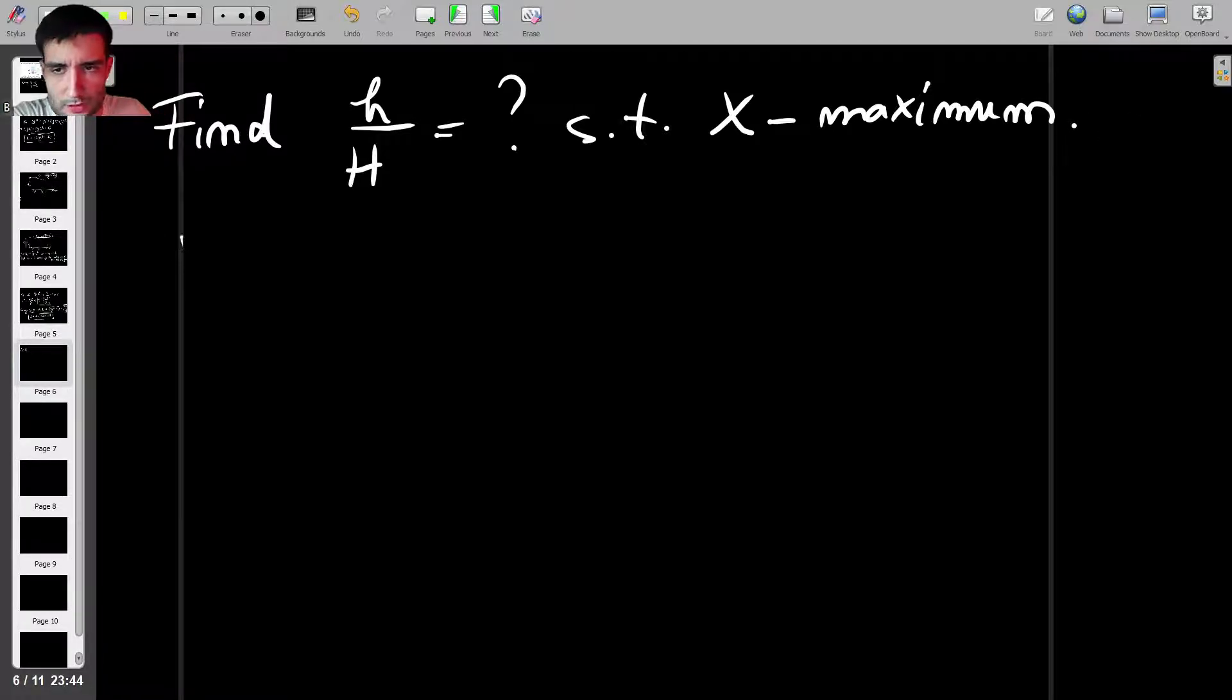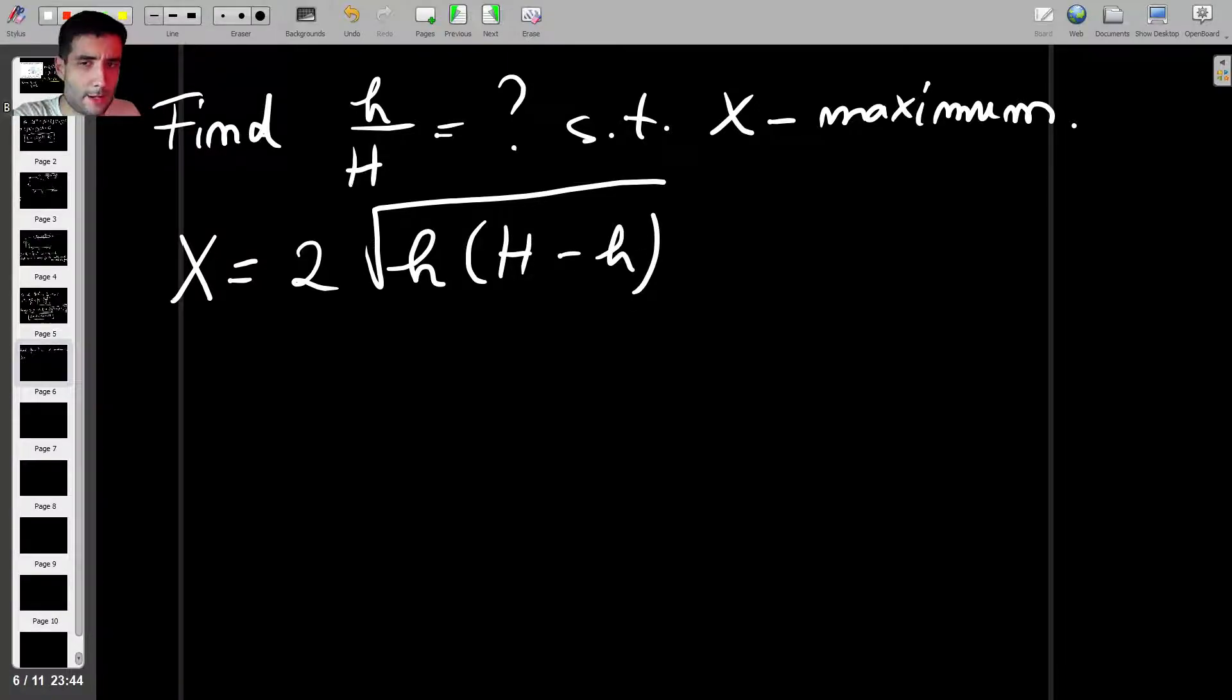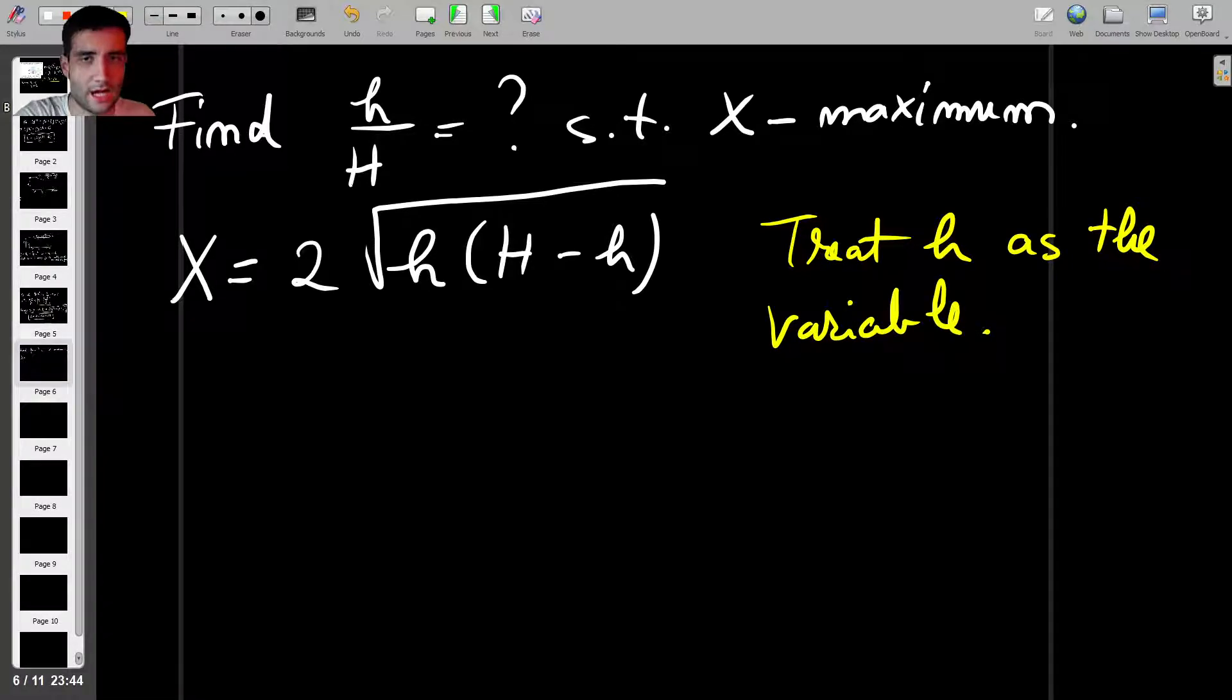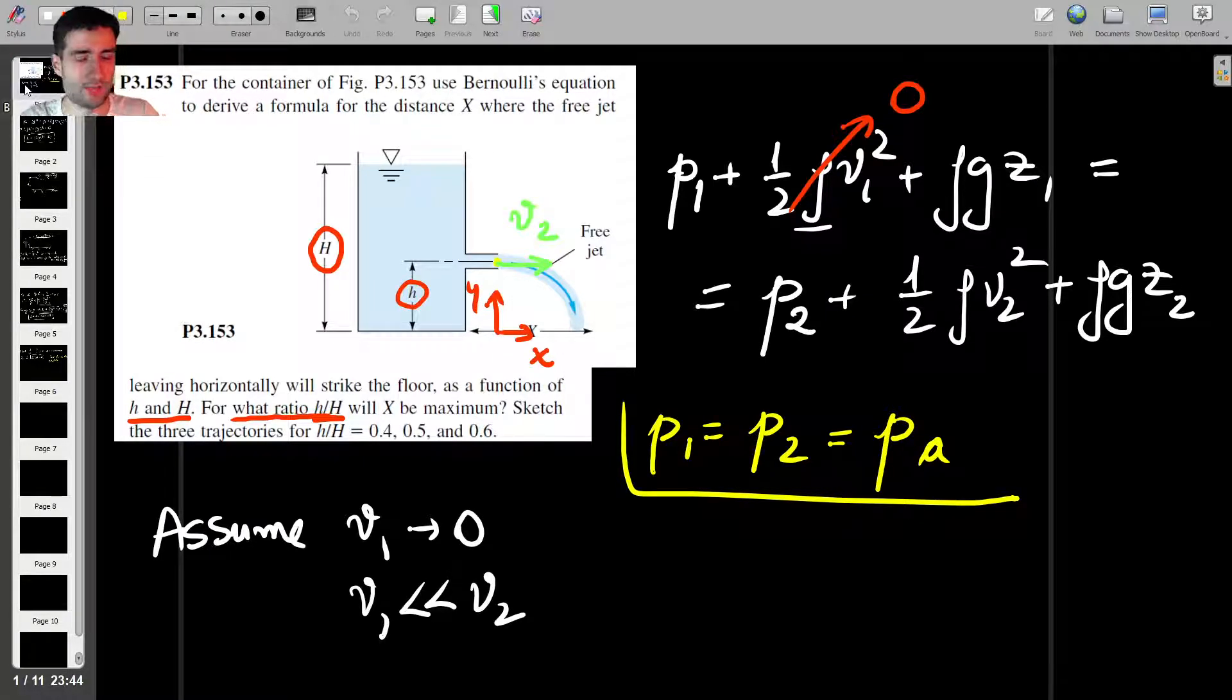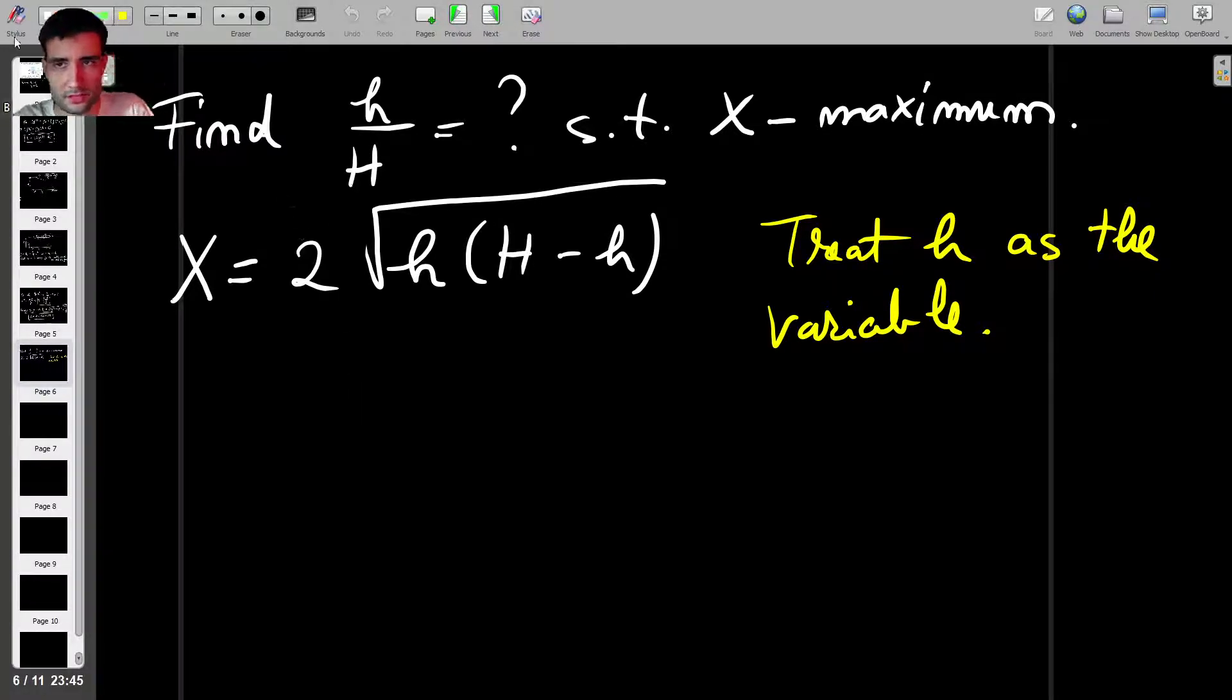The way in which I'll do this is, first of all, I'll rewrite the range. The range is going to be 2 times square root of h times H minus h, but I will treat lowercase h as the variable. In other words, I'm saying that I have a tank which is capital H meters tall, and then I have a choice. I can create an orifice at any height above the ground. And what I'm trying to answer is, where should I make that orifice so that my range is going to be maximum? In other words, the independent variable, my X in f of X, is going to be small h.